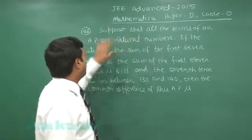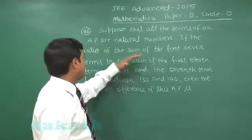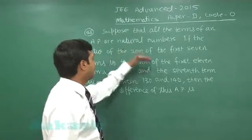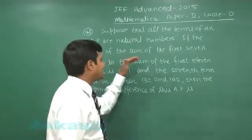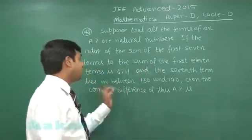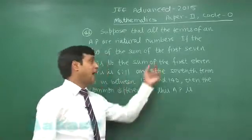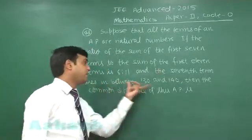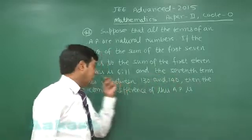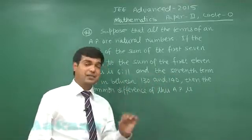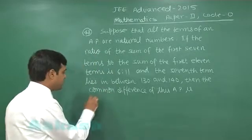Let us go for the next one that is 48. Suppose that all the terms of an AP are natural numbers, if the ratio of the sum of first seven terms to the sum of first 11 terms is 6 to 11 and the seventh term lies between 130 and 140, then the common difference of this AP is pretty simple question from sequence series.